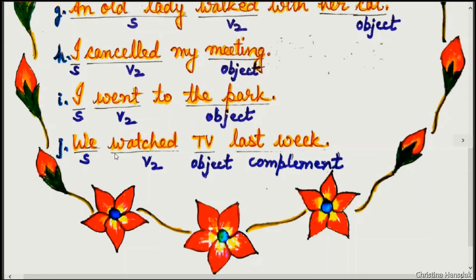Example J: We watched TV last week. 'We' is the subject, 'watched' is V2, 'TV' is the object, and 'last week' is the complement.